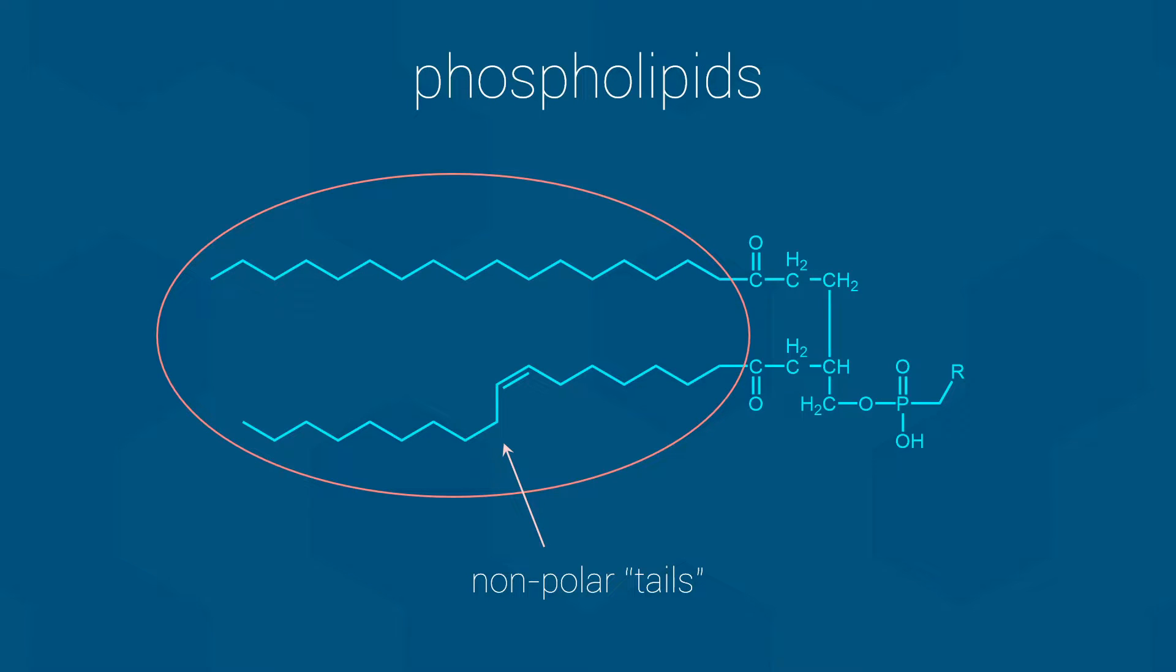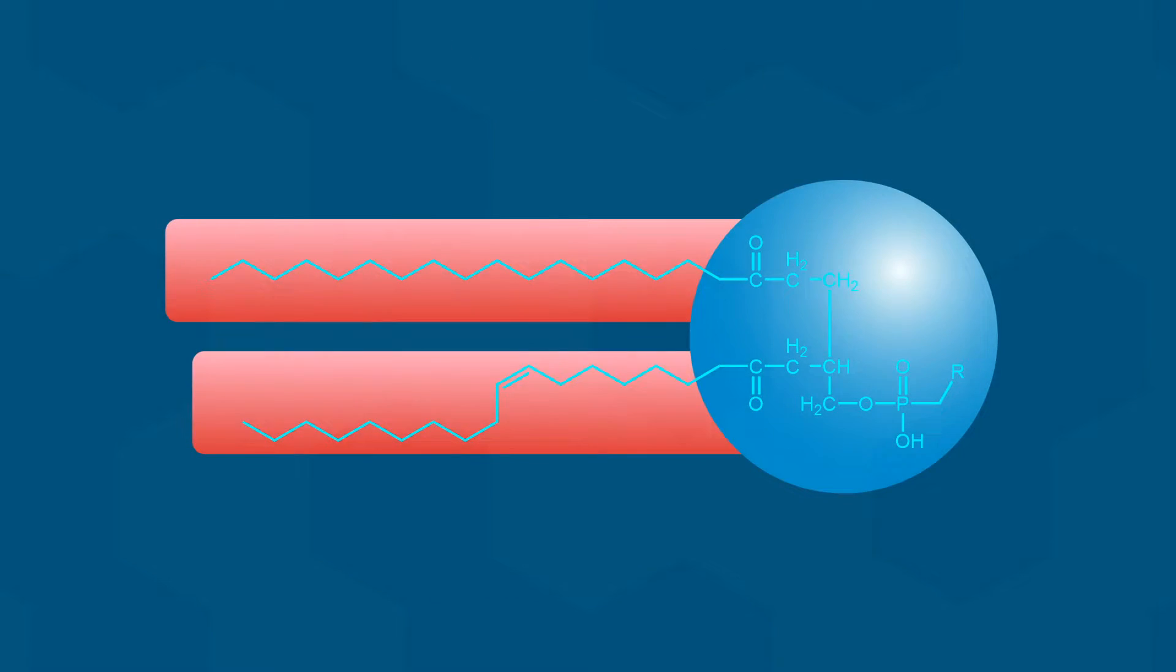So, as you can see, phospholipids contain both polar and nonpolar regions. Such molecules are referred to as being amphipathic. For simplicity, I will show the phospholipids like this for the remainder of the video.